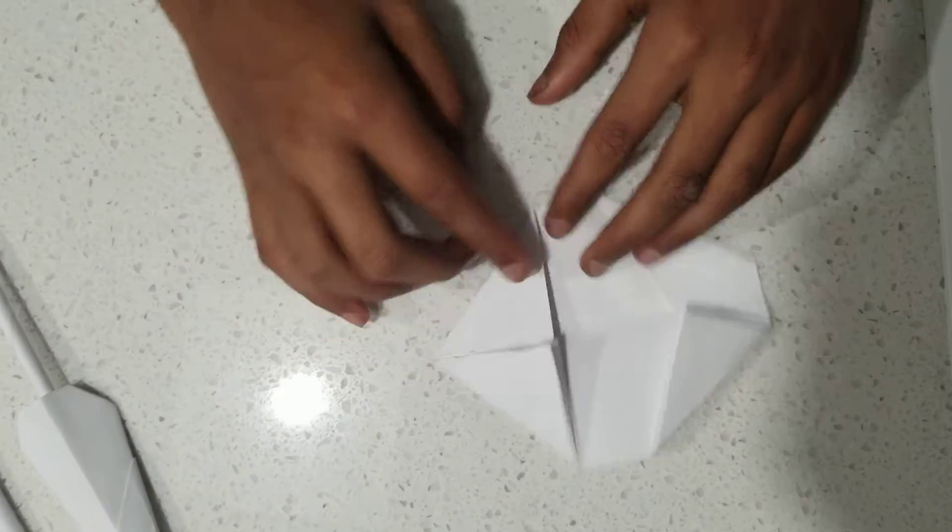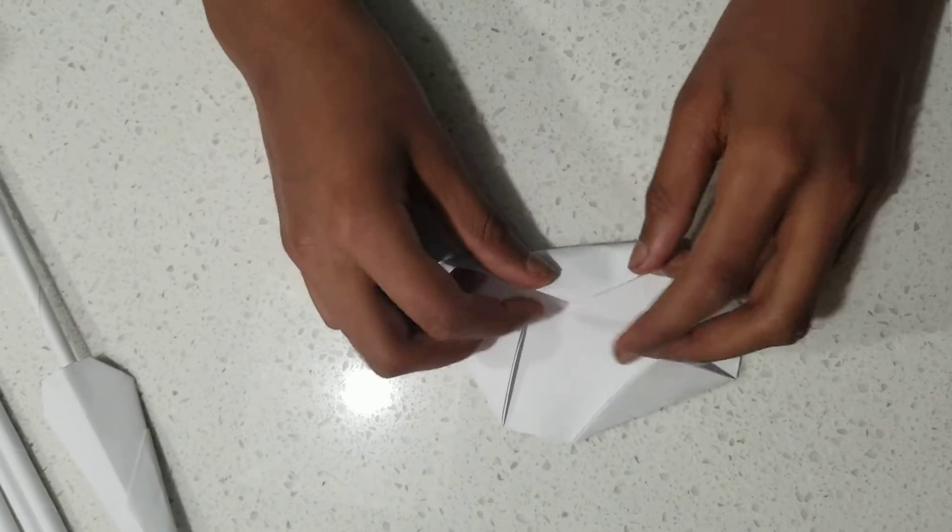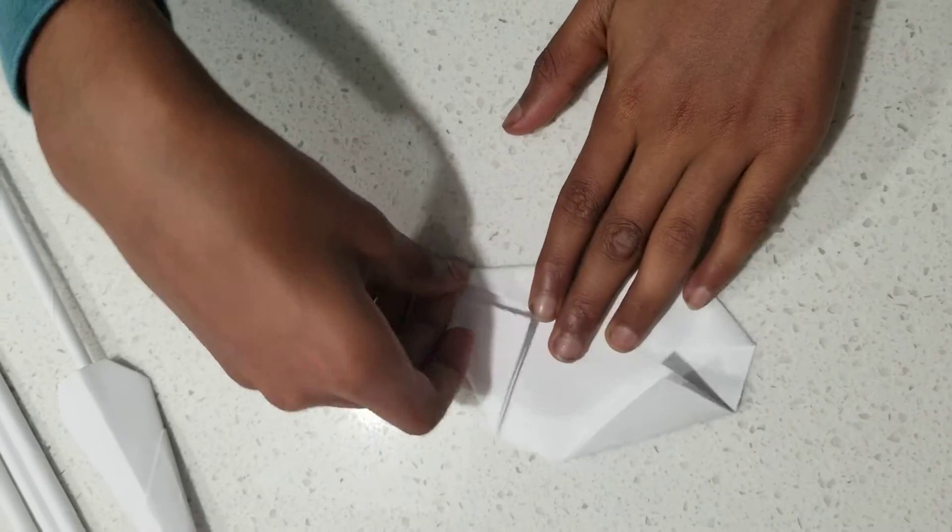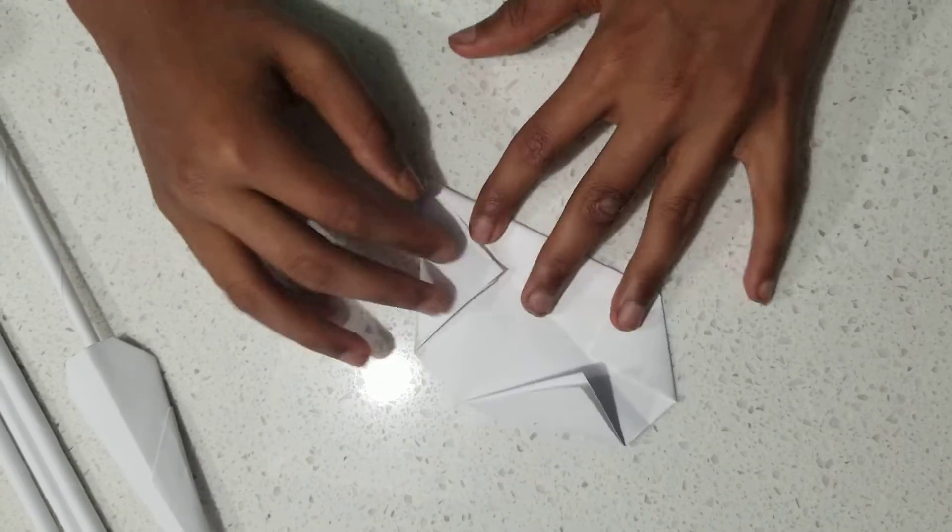So, now you have this structure. Then, we fold this corner to the margin. Like so. Do the same for the other side.